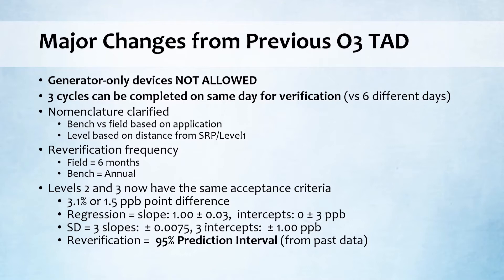Finally, levels two and three now have the same acceptance criteria, which is 3.1% or 1.5 ppb point difference. For the regression, the slope needs to be 1 ± 0.03, the intercept ± 3 ppb. The standard deviation of the three slopes is required to be ± 0.0075, and the three intercepts ± 1 ppb.